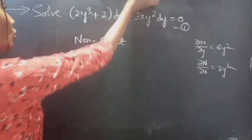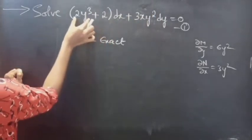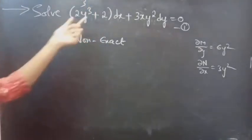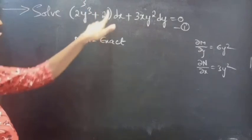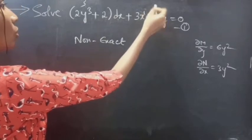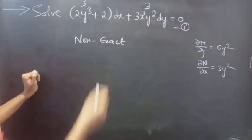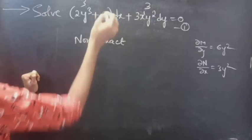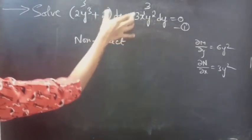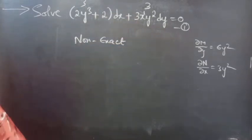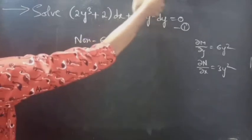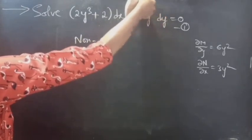It is a non-homogeneous equation. See the power of the first term — you are having y³, so 3 is the power of the first term. And here you are having a constant, so 1 + 2 = 3. Since you are having a constant term, we can say that it is a non-homogeneous differential equation.